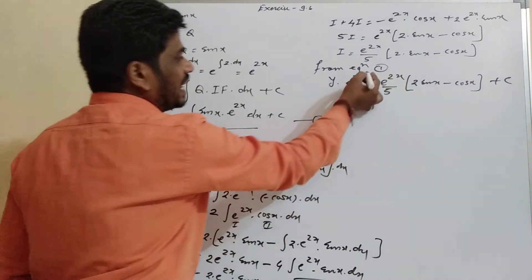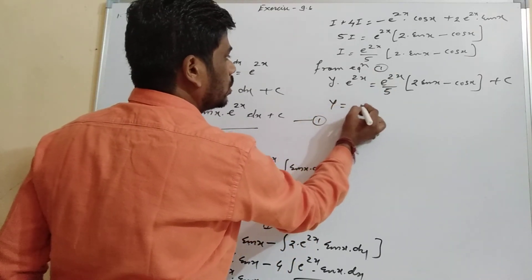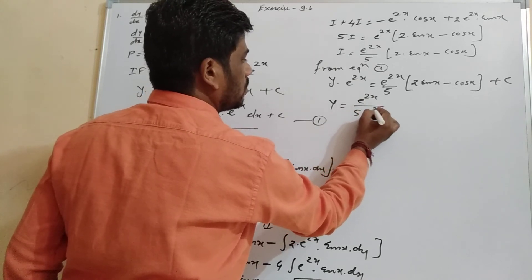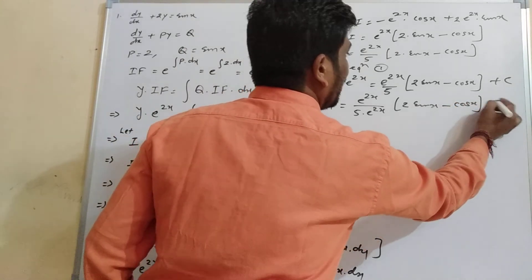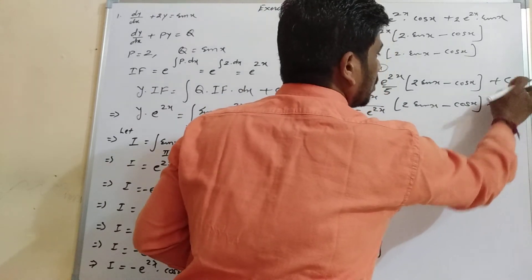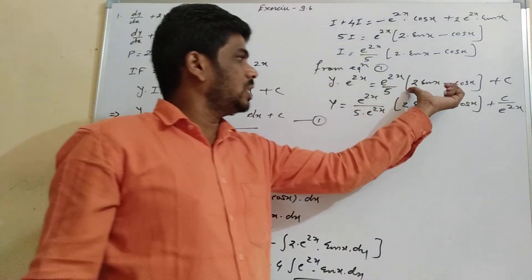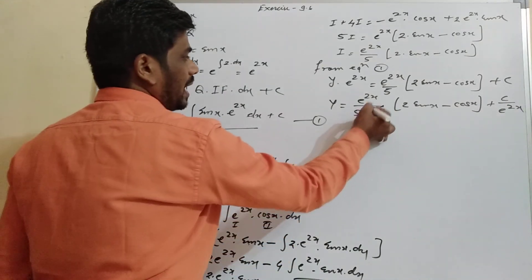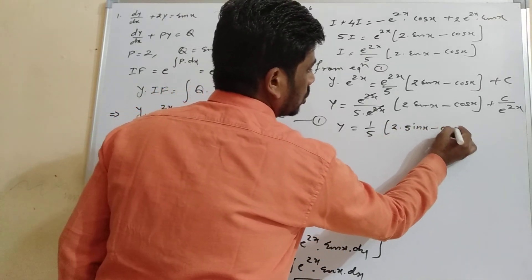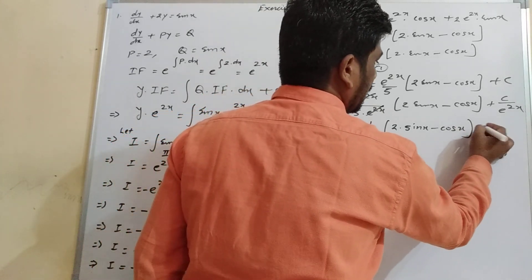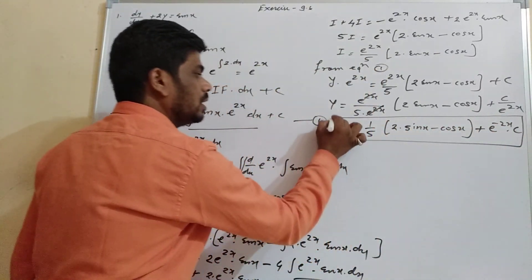Now, e raised to power 2x on both sides can be cancelled. So y equal to 1 upon 5 into (2 sin x minus cos x), and dividing c by e raised to power 2x gives c into e raised to power minus 2x. This is the solution of the given differential equation.